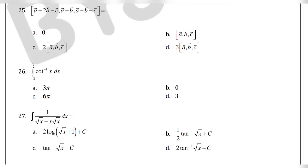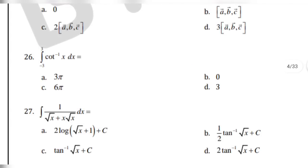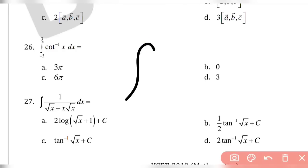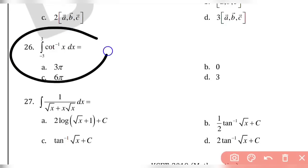Without any further delay, let's start. Okay, question number 26. If you have a short trick, it will be applied. You will be able to answer this question. When you have the limit and sin is different, what you have to do is check the odd or evenness of the function. If the function returns odd, then the direct answer is 0. If it returns even, then you have to go by the manual process. When you apply the odd and even rule, you are going to get odd, not even.